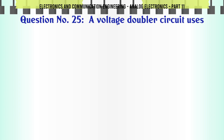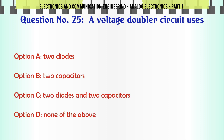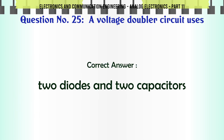A voltage doubler circuit uses. A. 2 diodes. B. 2 capacitors. C. 2 diodes and 2 capacitors. D. None of the above. The correct answer is: 2 diodes and 2 capacitors.